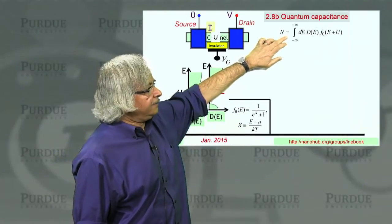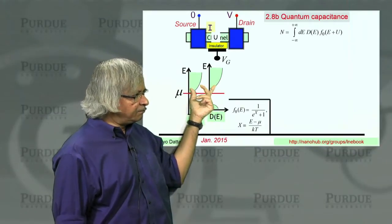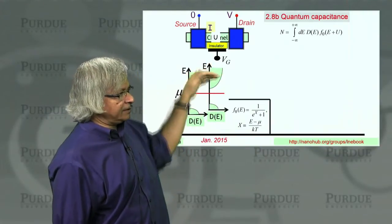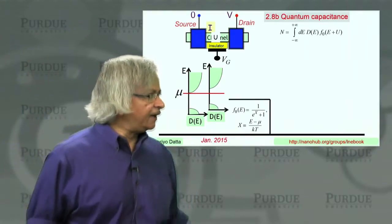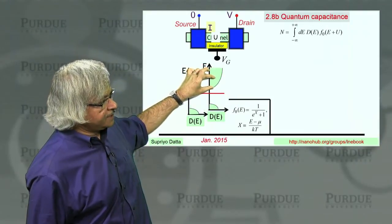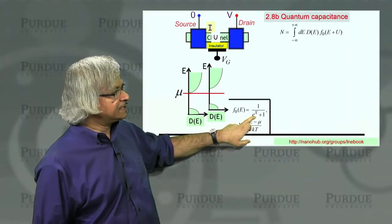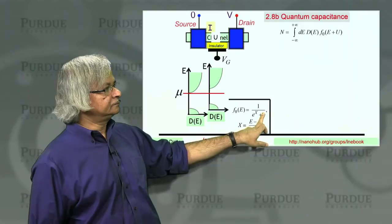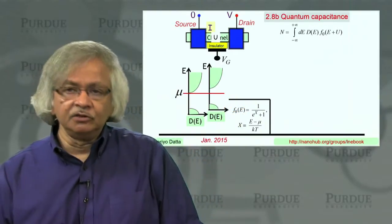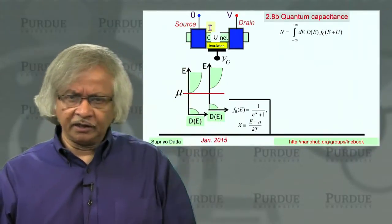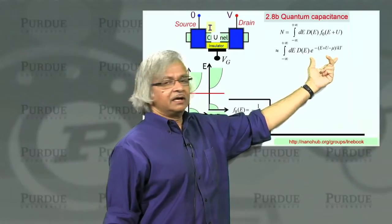We have this N given by the expression we just discussed. For the moment, let's think of a situation where the electrochemical potential is below the band — not quite into the band. When it's below the band, you can use what's called the non-degenerate approximation. The idea is that if the Fermi level is below the band, then for the energy range of interest, E minus mu is a positive number, so e to the X plus 1 — you can drop the 1. The Fermi function becomes an exponential of minus X. This is the Boltzmann approximation, often used in semiconductor devices.